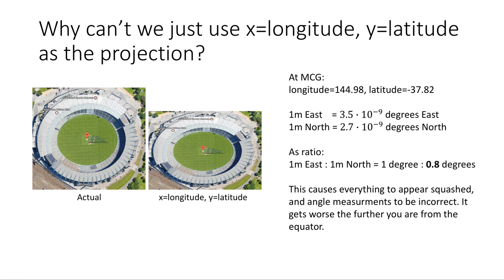So to make this more concrete, I've taken a test point at the Melbourne Cricket Ground, and it turns out that if we had a perfect circle one meter east, one meter north, in reality, when we convert that to longitudes and latitudes, that one meter east is 3.5 by 10 to the minus 9 degrees east, whereas the one meter north is 2.7 by 10 to the minus 9 degrees north. And we end up with the distorted ratio, which makes it look like that second image there, where everything's squashed. This gives us the wrong angle measurements, it gives us the wrong distance measurements, it gives us the wrong area measurements.